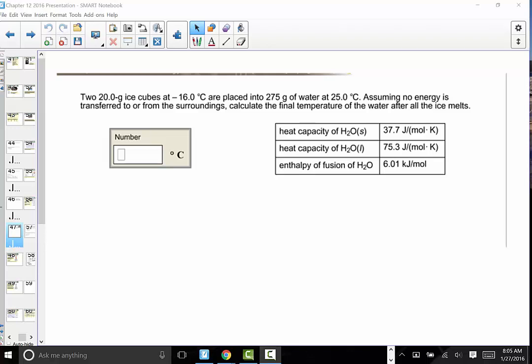Welcome to a lesson that is going to review a sapling question, which I believe is number 17. It is the ice cube question. So here we're given two 20 gram ice cubes at -16°C, and they're placed into 275 grams of water at 25°C. Assuming there's no energy transferred in or from the surroundings, calculate the final temperature of the water after all the ice melts.